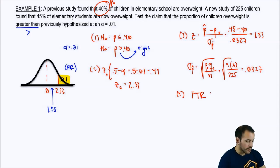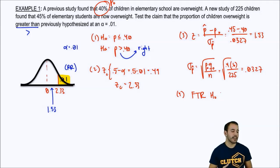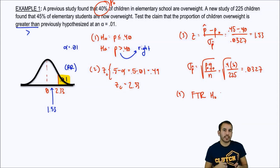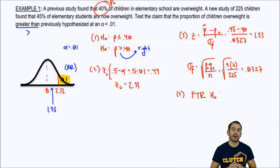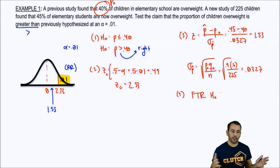So, we fail to reject the null hypothesis. And so, moral of the story is that there is insufficient evidence for us to support the claim that the proportion of children overweight is greater than previously hypothesized, which in this case was 40%. So, even though technically, number-wise, yeah, it's greater than 40% because we got 45%, based on variability and all that stuff, and I just don't want to get too into detail with that, moral of the story is that it's not high enough for us to say that it's greater than that, right? So, that's basically it for example number one, and that's it for proportions. So, let's go ahead and move on to some practice problems and see if we got this stuff down.